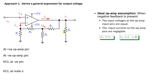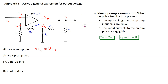Let us write the equations for this circuit. The voltage at the positive pin of the op-amp, V plus, is equal to V in, because the input voltage is directly connected to the positive pin of the op-amp. Applying the ideal op-amp assumption, V minus equals V plus, and since V plus equals V in, V minus equals V in as well. This means that the voltage at the node connected to the negative pin of the op-amp is V in.